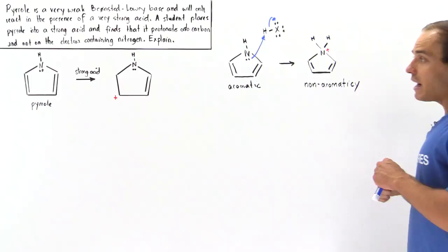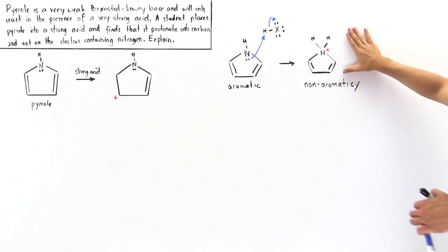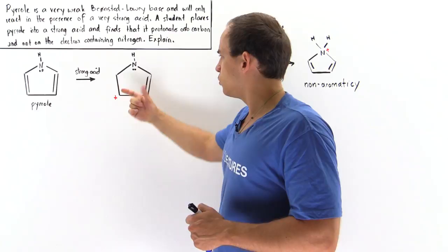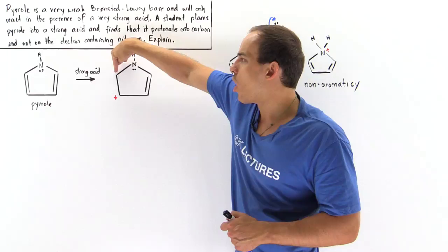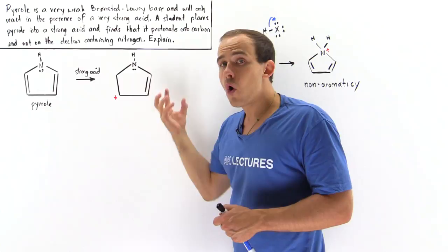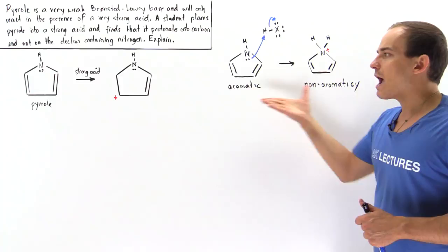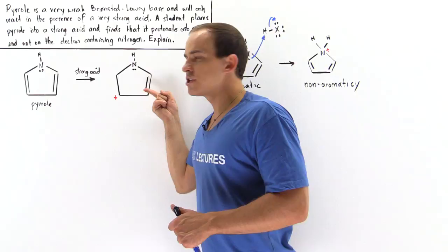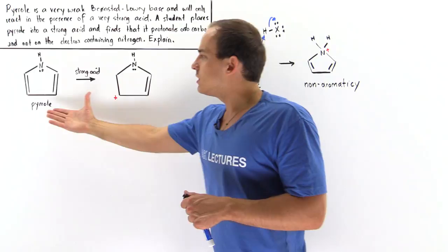That loss of aromaticity might seem like one reason why nitrogen protonation does not take place. But if we examine the product formed when carbon is protonated, that carbon also has its orbitals all used up, and it also loses aromaticity. So in both cases aromaticity is lost — this cannot be the answer to why one pathway occurs and the other does not.